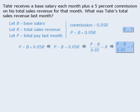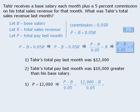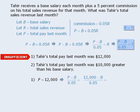Now let's examine the two statements. Statement 1 tells us that Tahir's total pay last month was $12,000 — in other words, P equals 12,000. Does this provide enough information to find the value of our new target question? If we replace P with 12,000, we can see that we still need to find the value of B in order to evaluate this. So statement 1 must be insufficient.